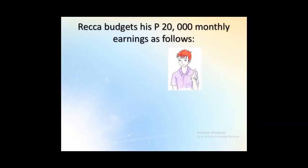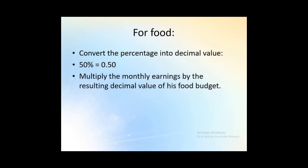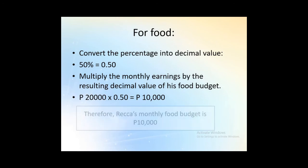Let's now have another example. RECA budgets his 20,000 monthly earnings as follows: Food, 50%; Electricity, 28%; Others, 22%. Compute how much does RECA spend in each item in his budget. For food, convert the percentage into decimal value. So 50% is equal to 0.50. Multiply the monthly earnings by the resulting decimal value of his food budget. So 20,000 multiplied by 0.50, so that is 10,000 pesos. Therefore, RECA's monthly food budget is 10,000 pesos.